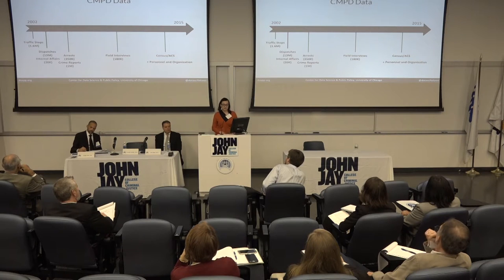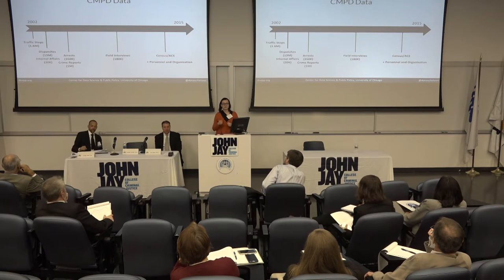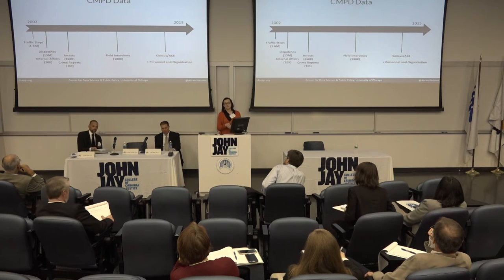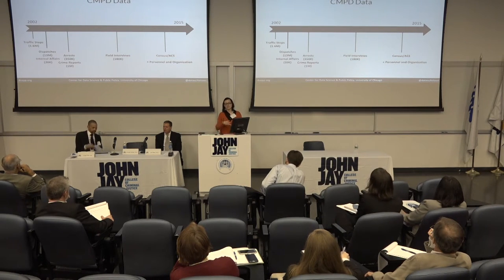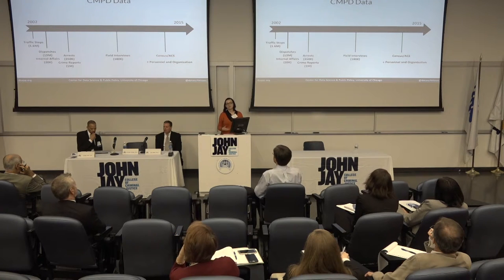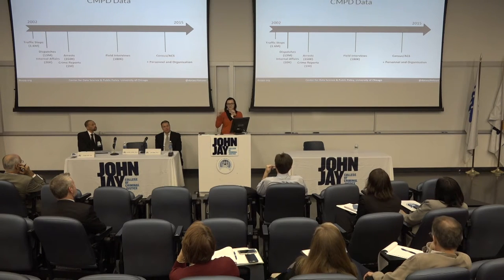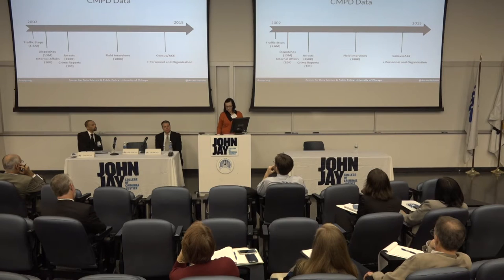One reason we partnered with CMPD is they have quite clean data going back over 10 years, with incident-level data linked to individual officers. We can see arrests, field interviews, and link this across all different datasets. We got all the data from the department, cleaned it, and put it into a centralized database. All of this was done with anonymized data — at no point did we know the names of police officers. When we produced risk scores, we gave them back to the department with officer hash IDs like 'officer hash ABEF,' and they de-anonymized it on their side to target interventions.